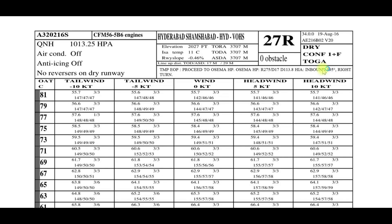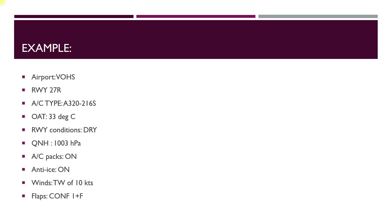This is how an RTOW chart looks like, and this chart is specific to the type of aircraft that we are talking about, the airport, the runway, the runway condition — which could be dry or wet — and the configuration for takeoff. So let us learn the calculation by taking an example.